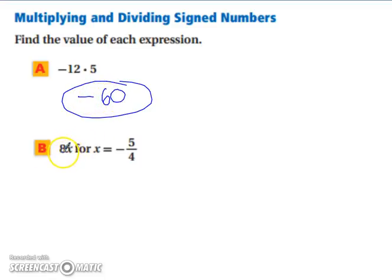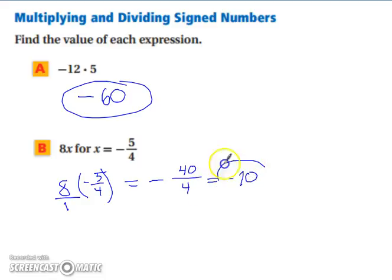Let's try B. We have 8 times our value of x, which is negative 5 fourths. So we have 8 times negative 5 fourths. Well, we have a positive times a negative, so we know our result is going to be a negative number. And then we can think of it as 8 over 1. So we have 8 over 1 times negative 5 over 4, which would be negative 40 over 4. And that reduces to negative 10. Again, you could have cross reduced first. Either way is fine.